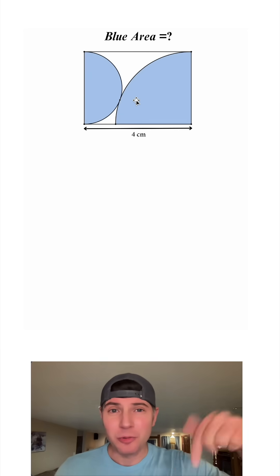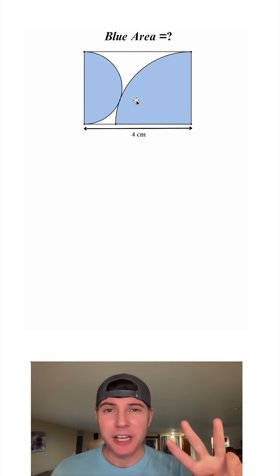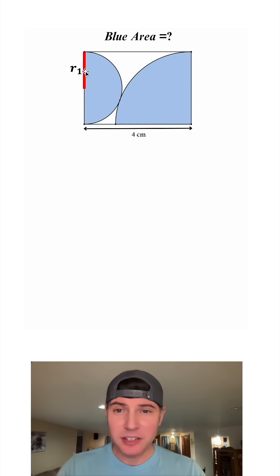If you want to try it on your own, pause it right now because I'm going to solve it in 3, 2, 1. First, let's label the radius of the semicircle r sub 1, and we'll label the radius of the quarter circle r sub 2.